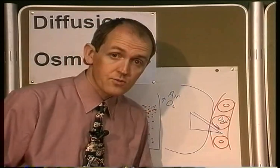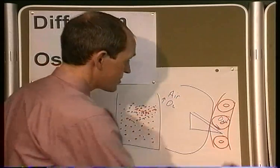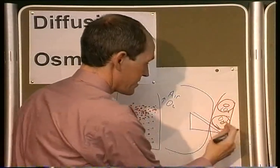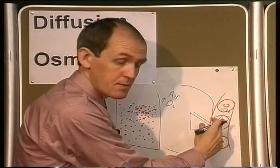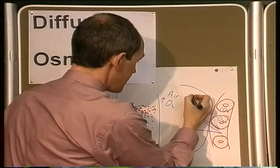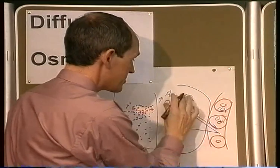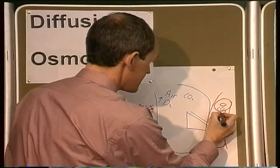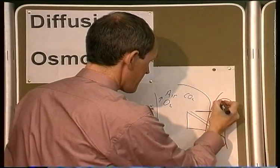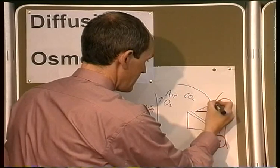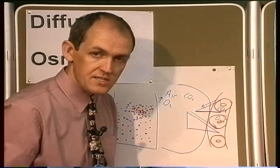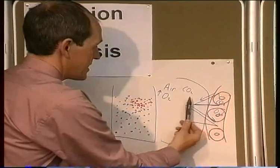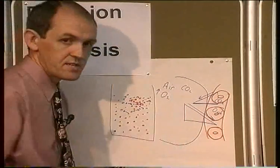The converse is true with carbon dioxide. CO2 levels are fairly high when the blood arrives in the pulmonary capillary, and in the alveoli the CO2 levels are fairly low. So this time the diffusion gradient exists, but it's the other way around. Carbon dioxide will tend to diffuse down the diffusion gradient from the capillary into the alveoli, where it can then be breathed out.